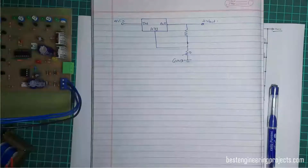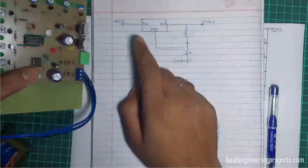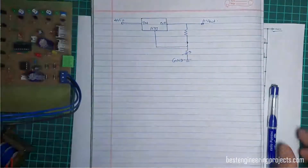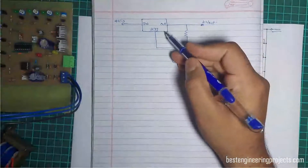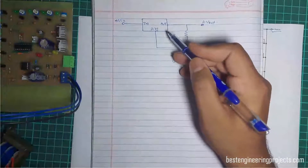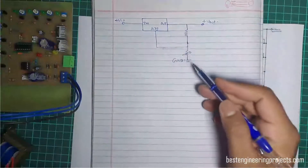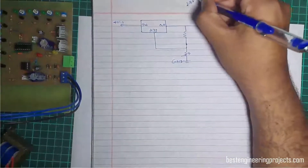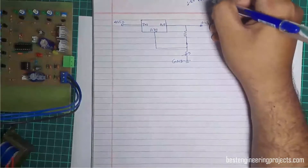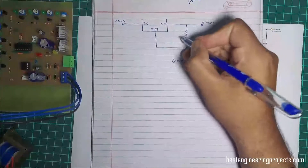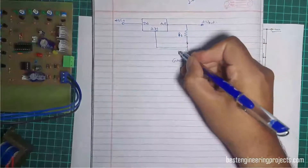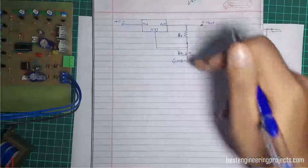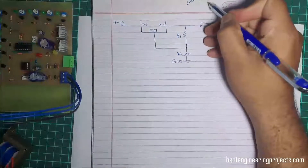Now let's see how the variable regulator IC LM317 works. The LM317 is a 3-terminal positive voltage regulator which can be operated with output voltage at any setting over the range of 1.2 volts to 37 volts. Resistor R1 and variable resistor R2 set the output to any desired voltage over this adjustment range.